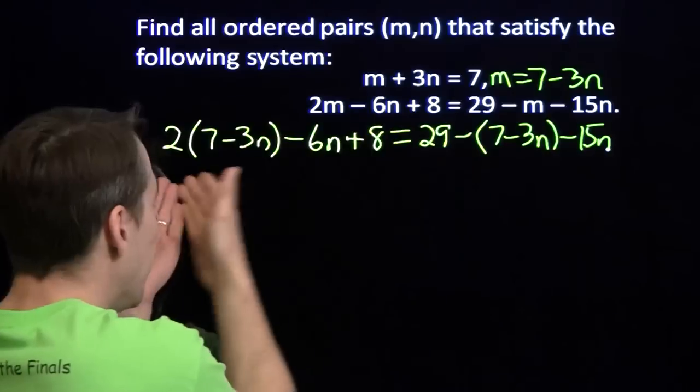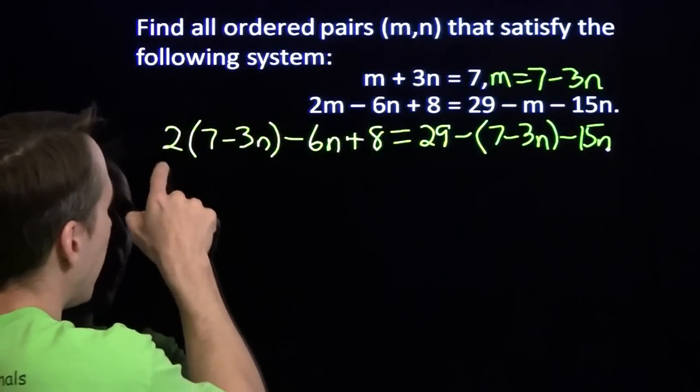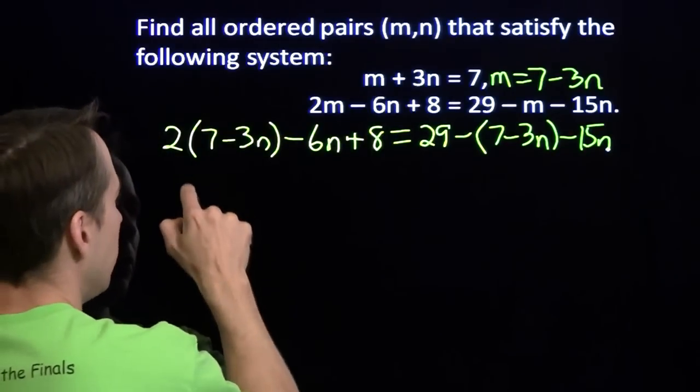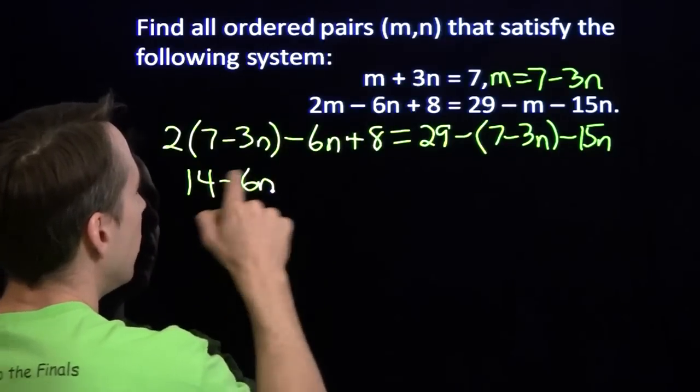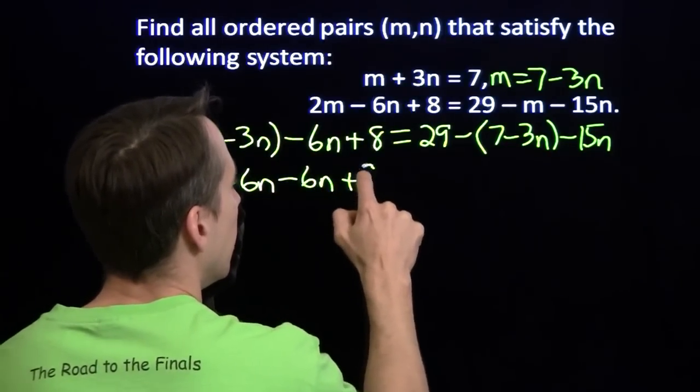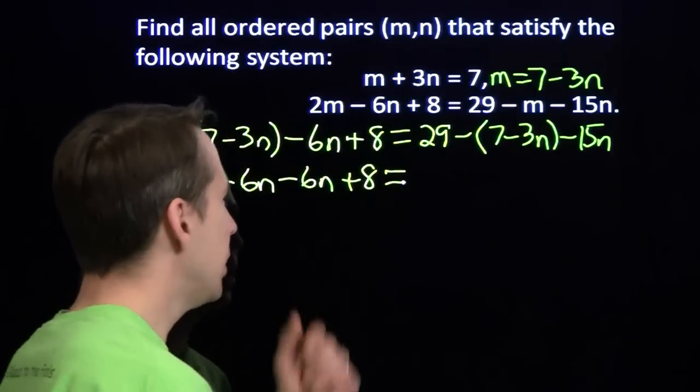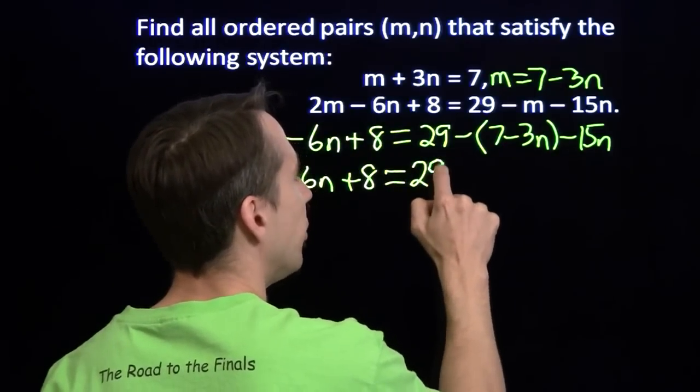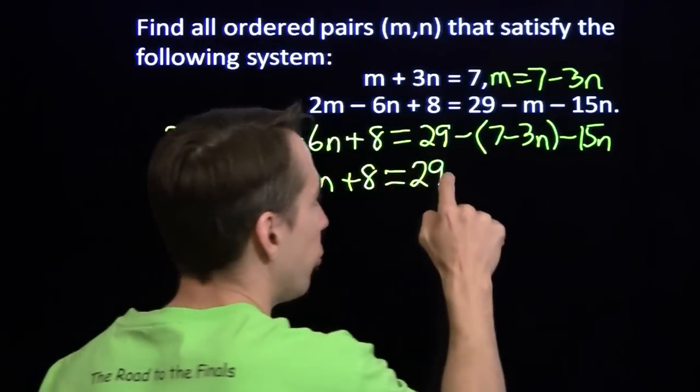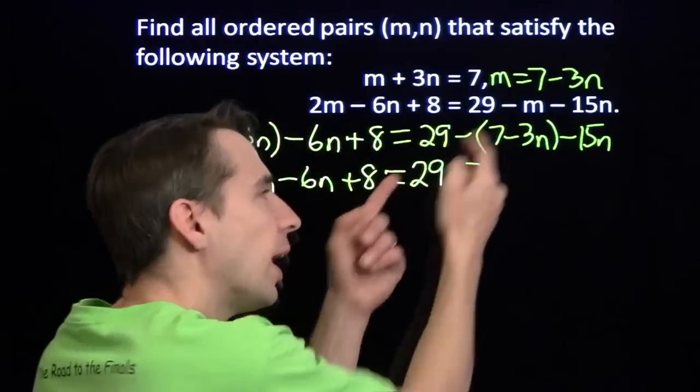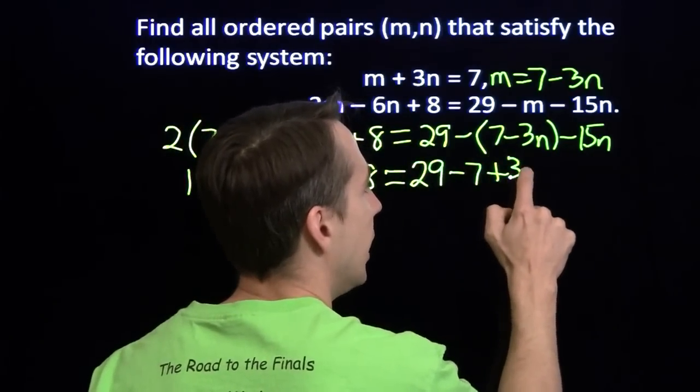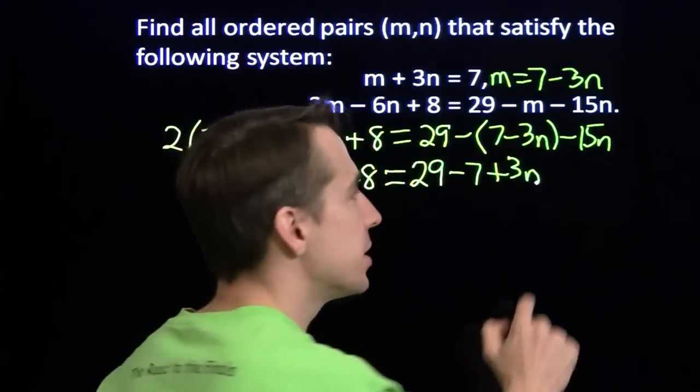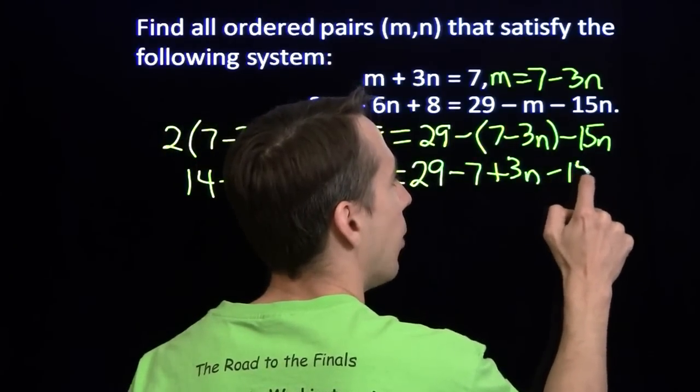Now we'll expand our parentheses here. We'll expand this product, 2 times 7 is 14, 2 times a minus 3n gives us minus 6n, then we have another minus 6n, and we add the 8. Now over here we have 29, and here's where our parentheses are so important. We're subtracting the 7 and we're subtracting the minus 3n. That gives us minus a minus, that gives us a plus 3n. If we'd forgotten these parentheses, we might have gotten that sign wrong, and that would be bad.